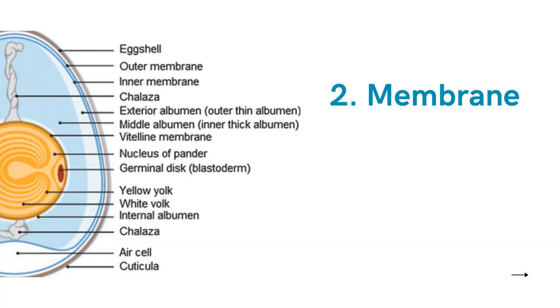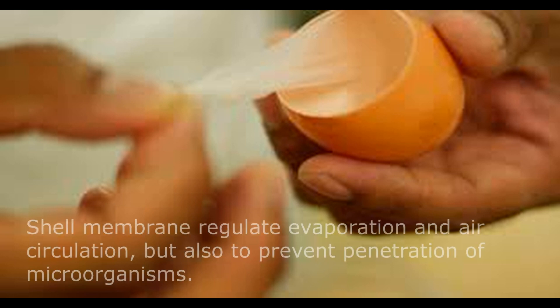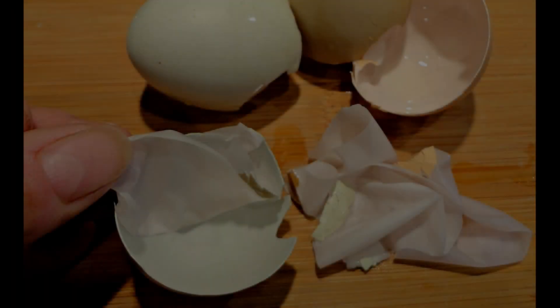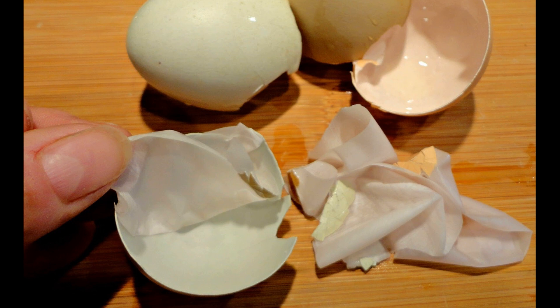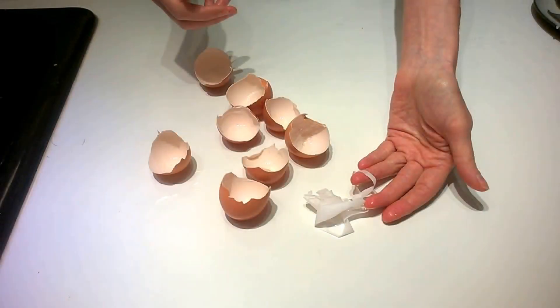Under the shell, there is an outer and an inner shell membrane. The outer membrane, which is immediately inside the shell, is the most resistant. Besides serving a packaging role, the shell and the shell membranes have biological functions — namely to regulate evaporation and air circulation, but also to prevent penetration of microorganisms. A colorless wax membrane called the cuticle surrounds the outer shell. It is highly alkaline and therefore acts bacteriostatic. This wax membrane dissolves by washing, which is why in Denmark, washing the eggs before sorting is not allowed.